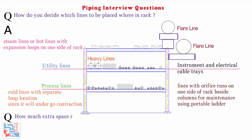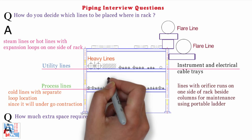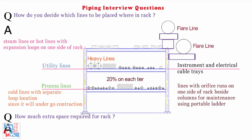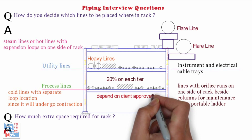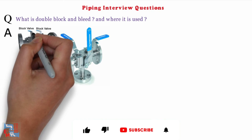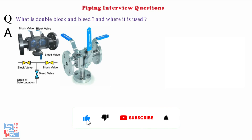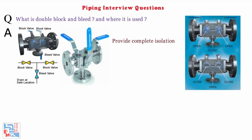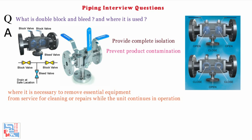Next: How much extra space is required for rack? Usually, 20% of extra space is required for future lines on each tier, but it all depends on the client approval and requirement. Next: What is double block and bleed and where is it used? Two block valves with a bleed ring in between, with a bleed valve connected to the hole of the bleed ring to provide complete isolation. Mostly, it is used to prevent product contamination or where it is necessary to remove essential equipment from service for cleaning or repairs while the unit continues in operation.